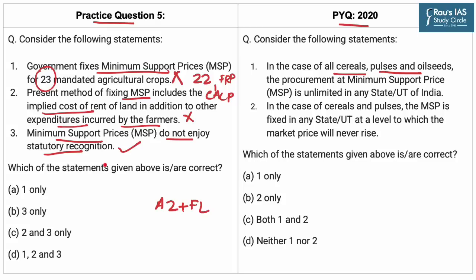Although in the farmers' protest, farmer groups have been demanding legalization of MSP, in its present status MSP does not enjoy any statutory recognition. This means the government is under no obligation to purchase all the commodities for which MSP has been declared. Which of the following statements given above is or are correct? From the above discussion, we can conclude that Option B is the right answer.